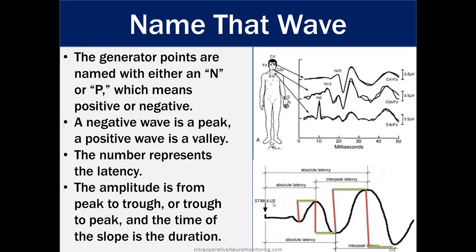Some key definitions: starting with the stimulus, absolute latency of a wave is measured from stimulus onset to the beginning of the wave. Interpeak latency measures from one part of the sinusoidal wave to the next.